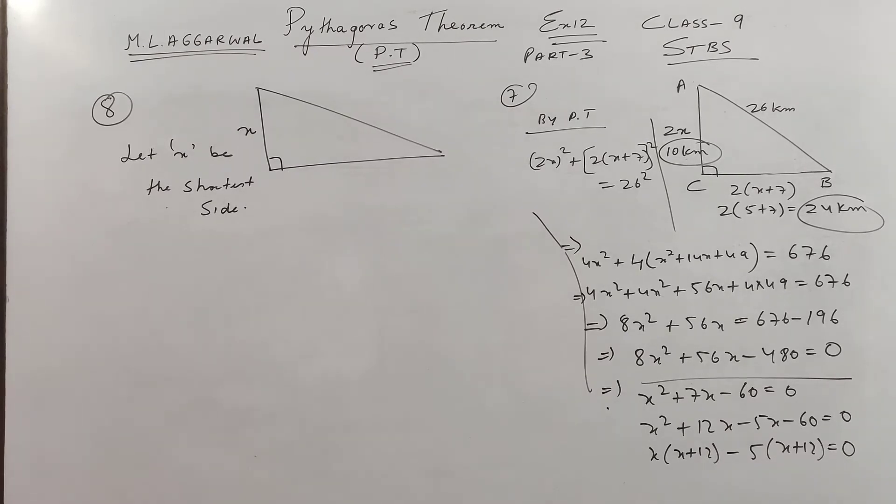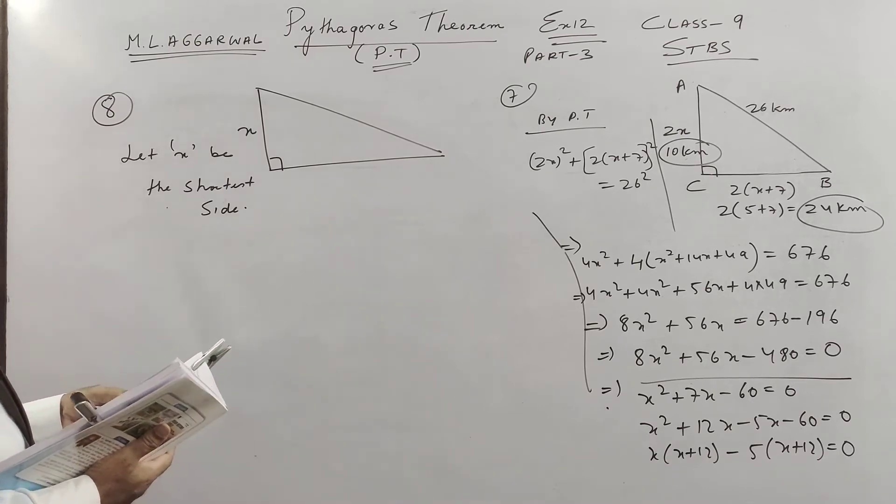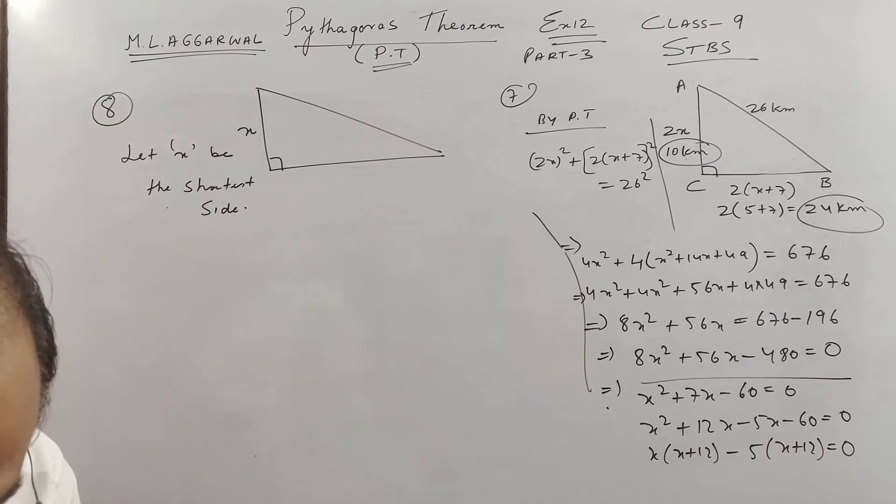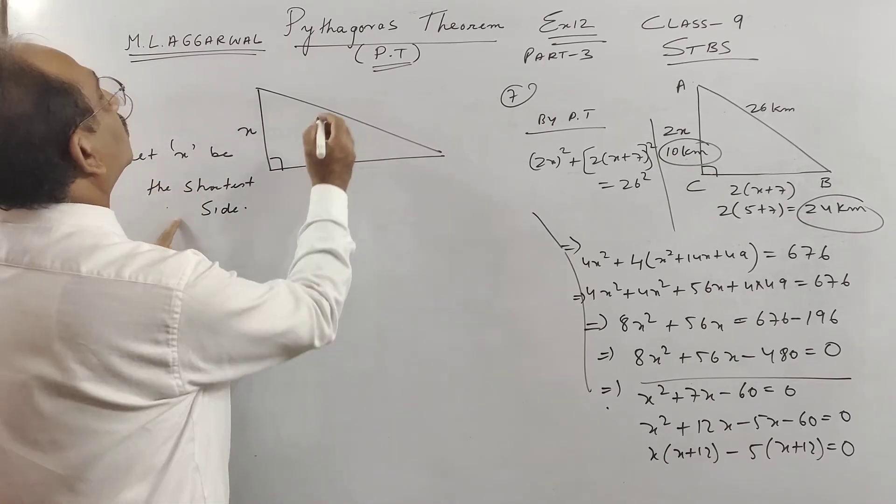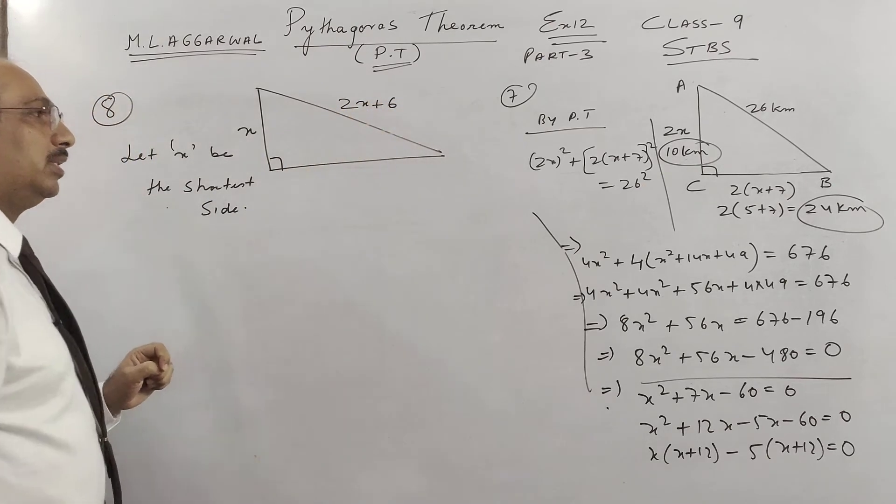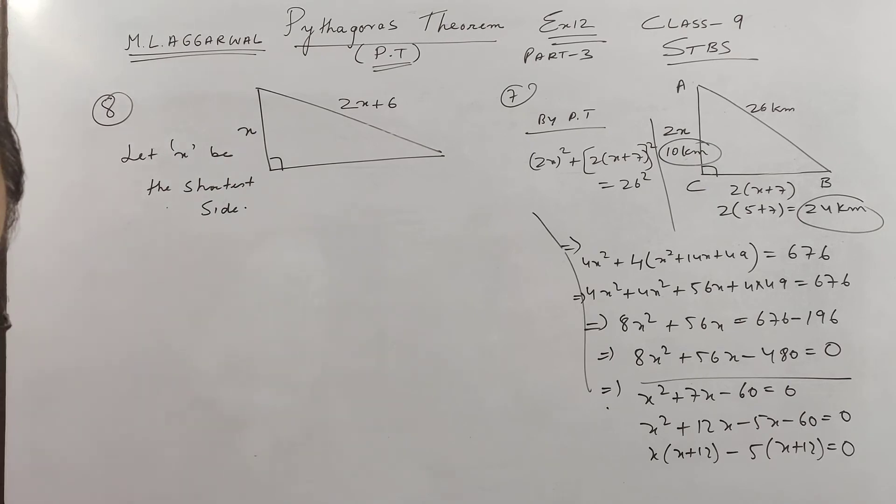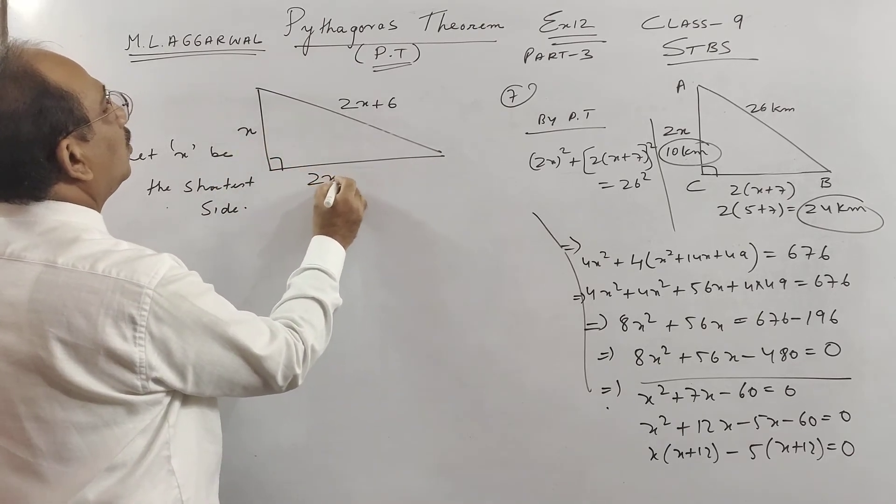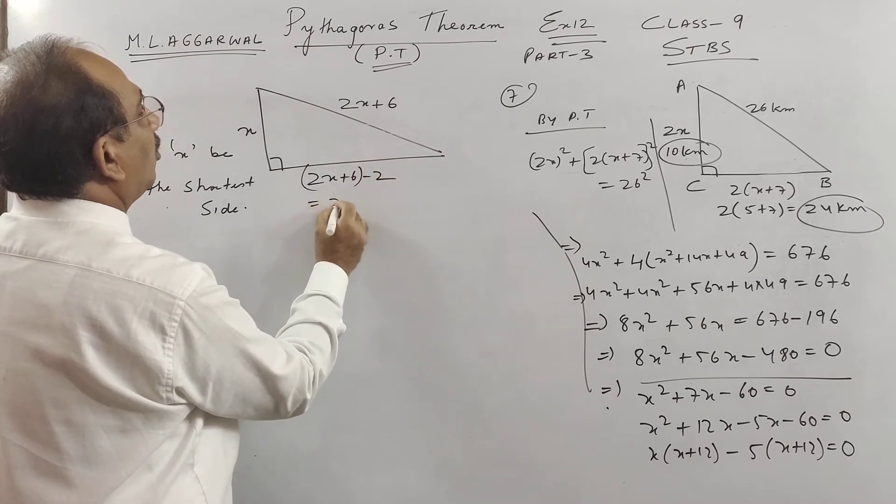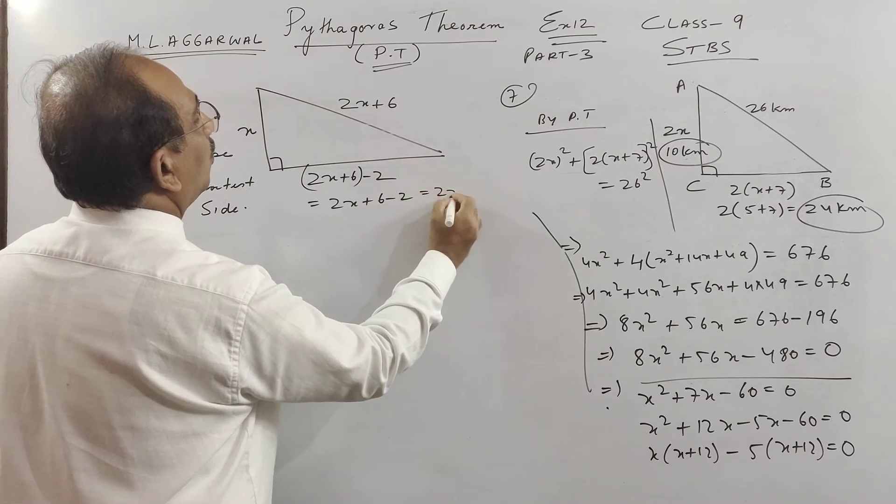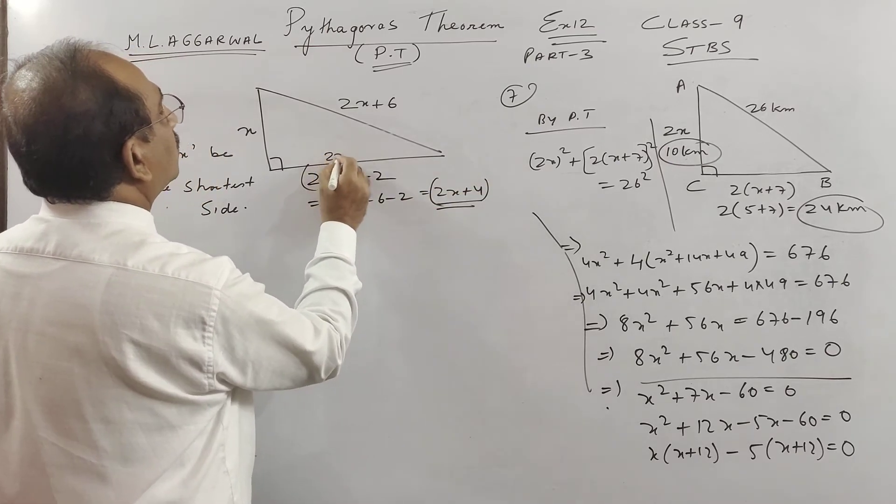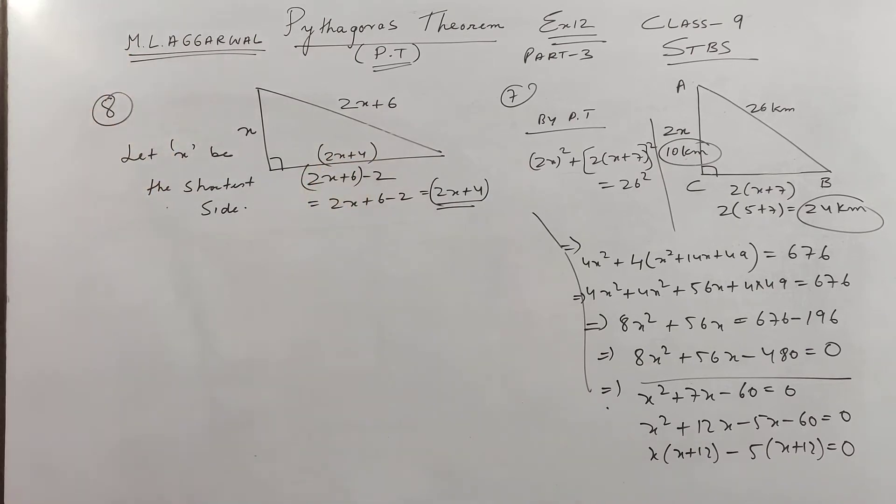Let us go to the last question of this session. See here we have if you see the book, question is the hypotenuse of a right angle triangle is 6 more than twice the shortest side. Let X be the shortest side, hypotenuse is 6 more than twice the shortest side. And the other side if you see children, the third side is 2 meter less than hypotenuse. So finally what we get children, this is 2X plus 4. So this side is 2X plus 4. And hypotenuse is 2X plus 6.